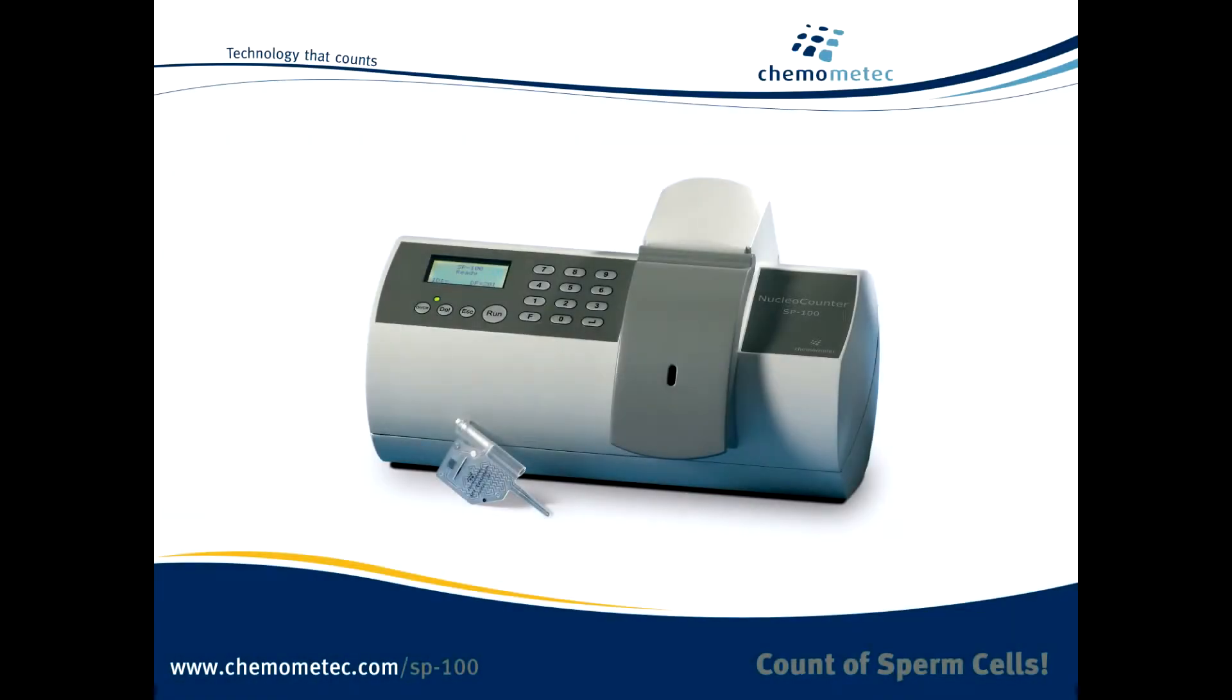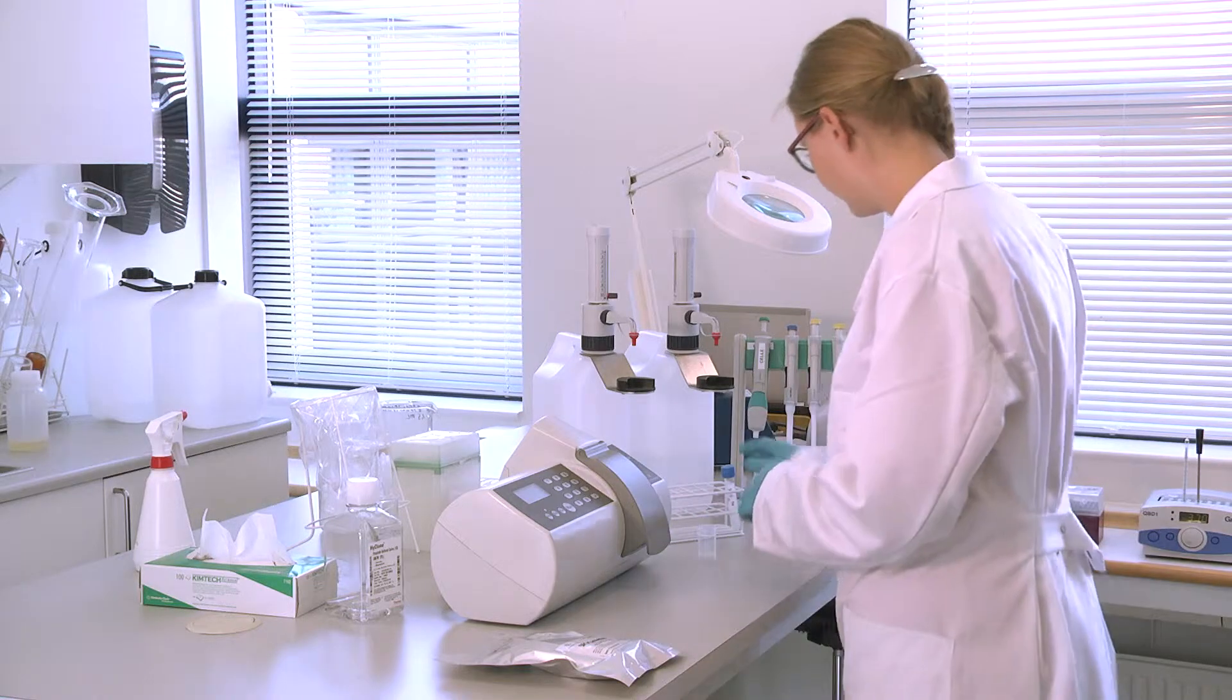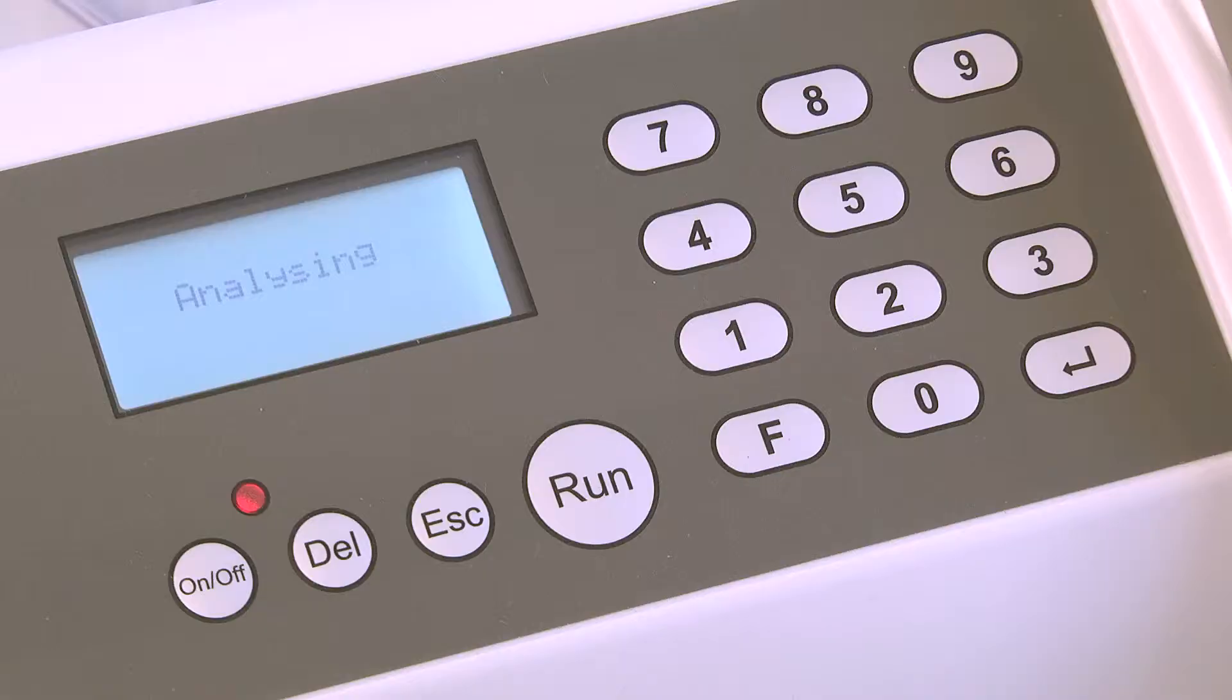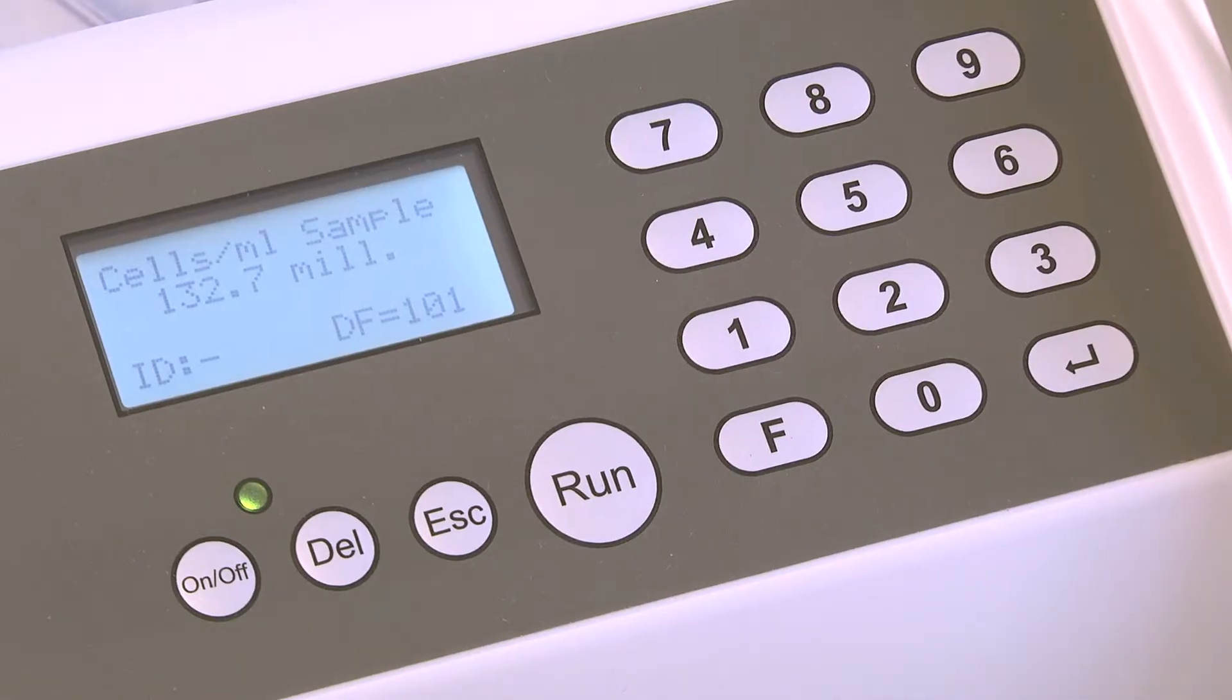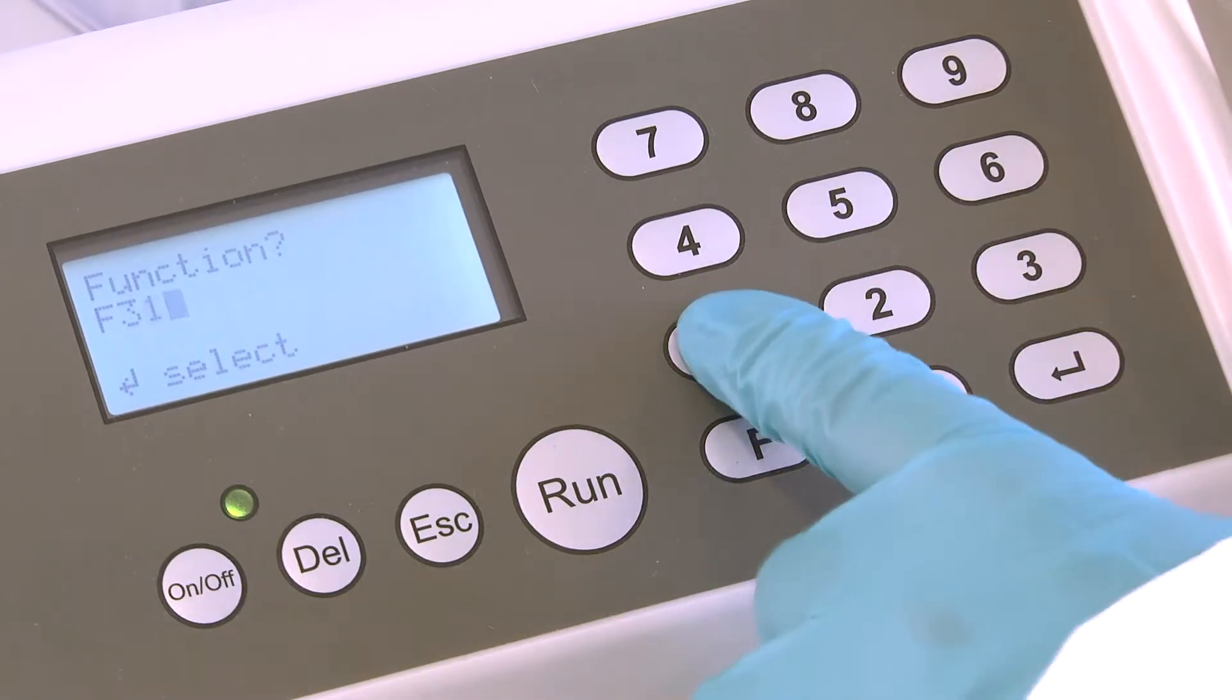The Nuclear Counter SP100 is the world's easiest semen counter. It provides the total sperm cell count in 30 seconds and measures percent viability as well.